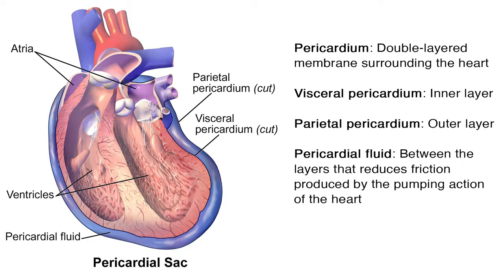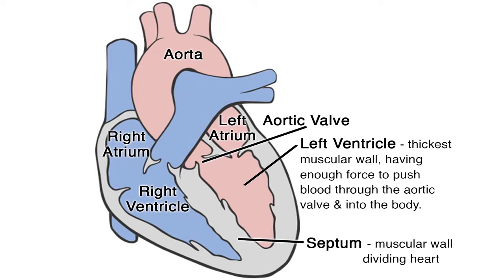The heart is divided in half by a muscular wall, the septum. Each half has an upper collecting chamber, the atrium, and a lower pumping chamber, the ventricle. The left ventricle has the thickest muscular wall, having enough force to push blood through the aortic valve and into the body. You can remember their location because A comes before V — the atrium is above the ventricle.